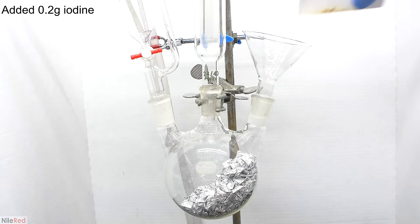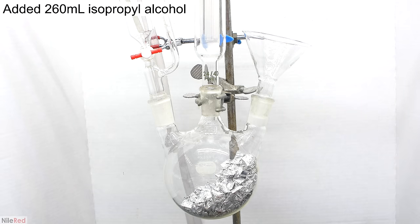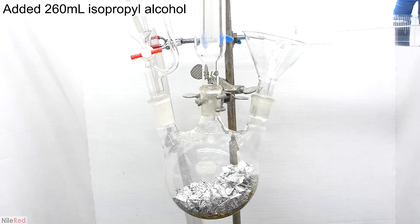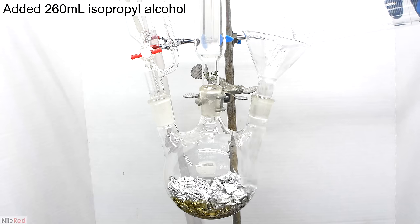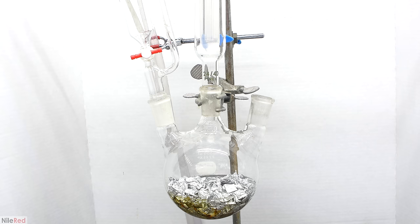After all the aluminum foil was added, I dumped in about 0.2 grams of iodine. Then on top of everything, I added about 260 milliliters of dry isopropyl alcohol. As the isopropyl alcohol is added, it takes on a slight yellow color as it dissolves some of the iodine. At this point, we don't need the funnel anymore, so I replaced it with a stopper.